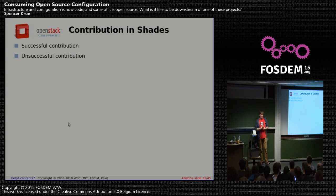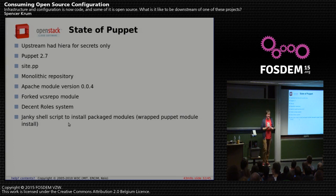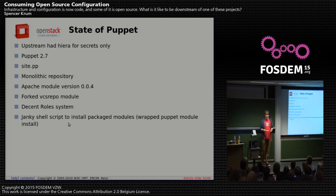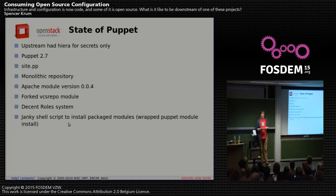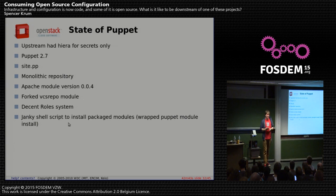Now for some technical details. We're going to talk about the Puppet situation in OpenStack Infra. When I got there about seven or eight months ago: upstream used Hiera for secrets only; they were on Puppet 2.7, which is really bad; they used a site.pp with no ENC; they had a monolithic repository with all modules in one big Git repo — about 60 modules; and they were stuck on Apache module version 0.0.4 from around 2012.